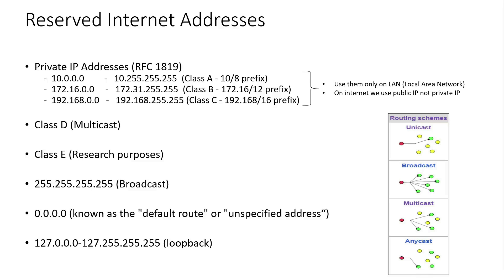The next type is class E — it is used for research purposes. The next type is the IP 255.255.255.255 — it is a broadcast IP. The next is the IP 0.0.0.0 — it is also known as the default route or unspecified address. The last is all IPs that start with 127. They are used for loopback. Loopback is traffic local to your host.